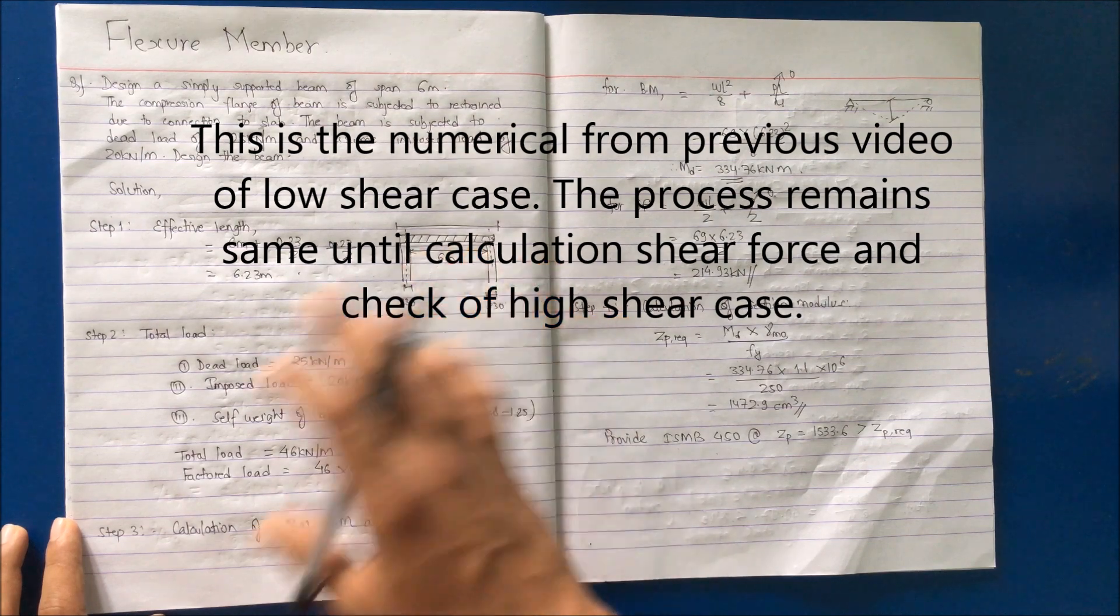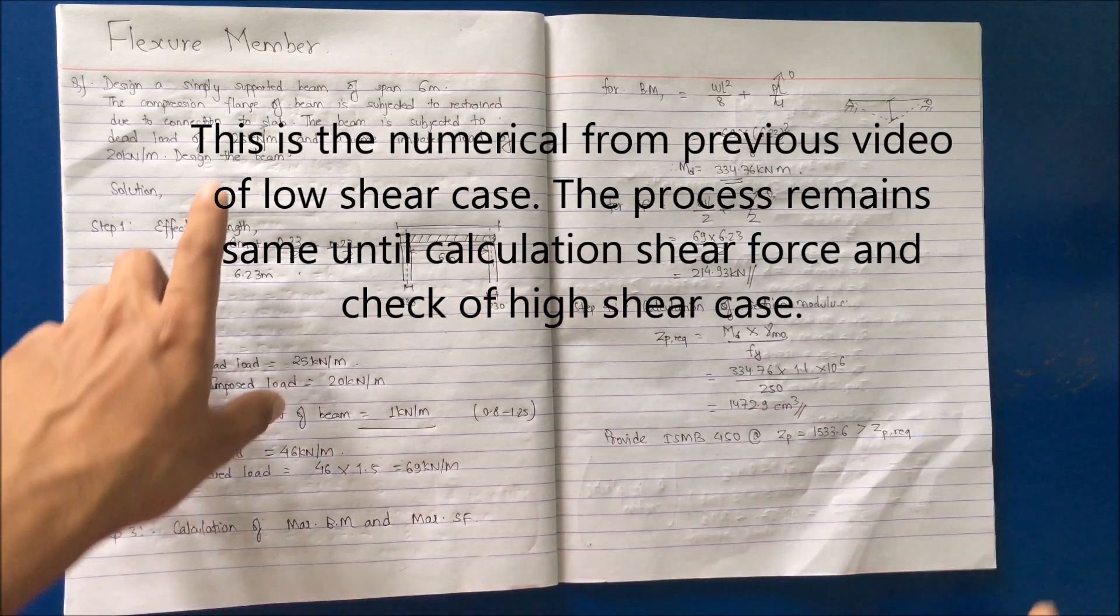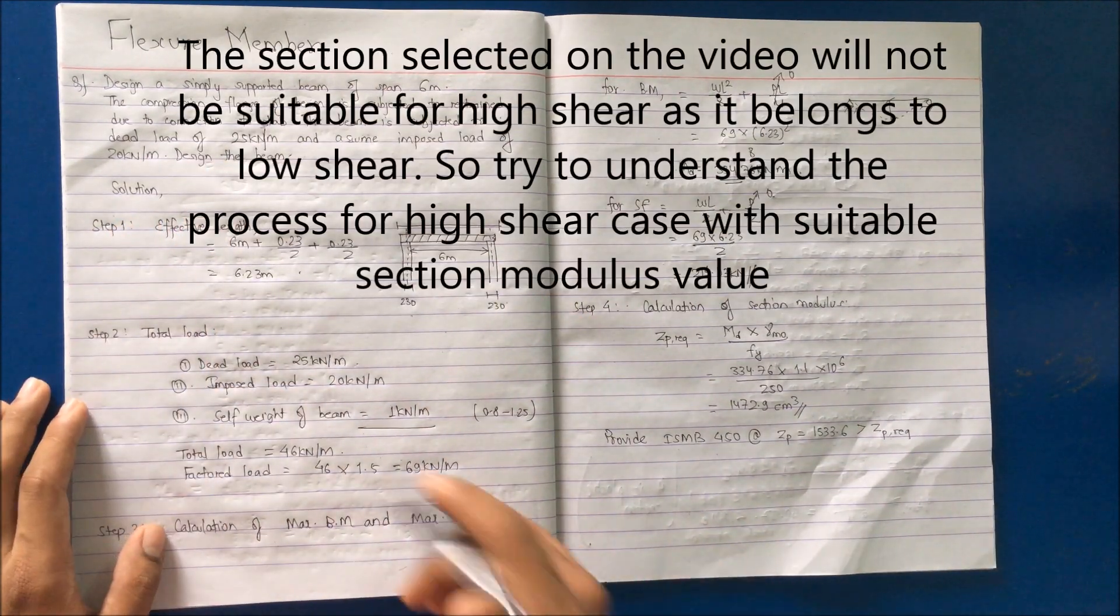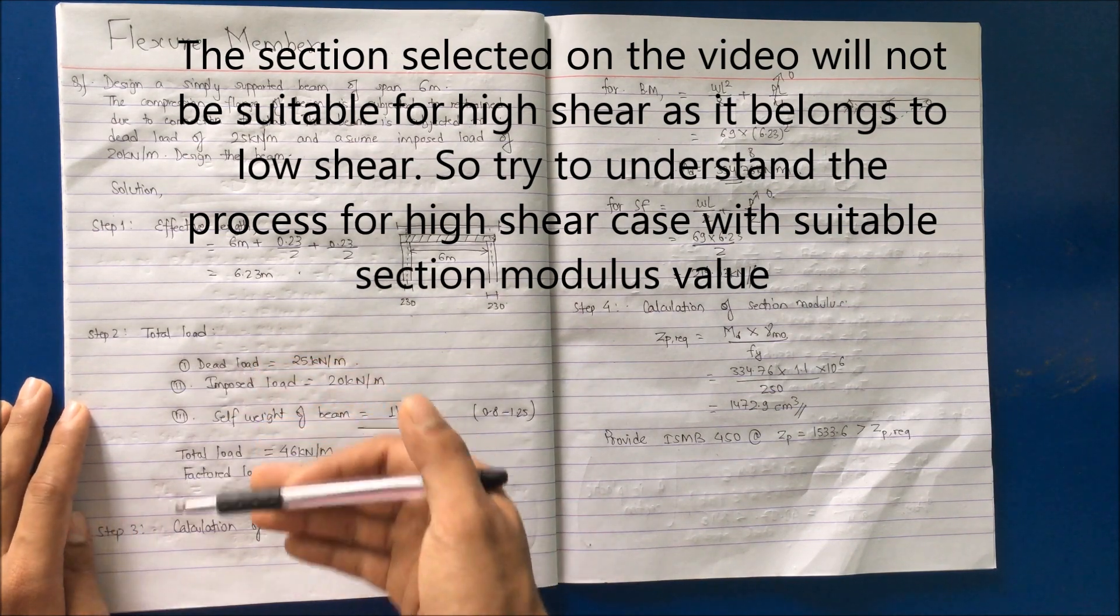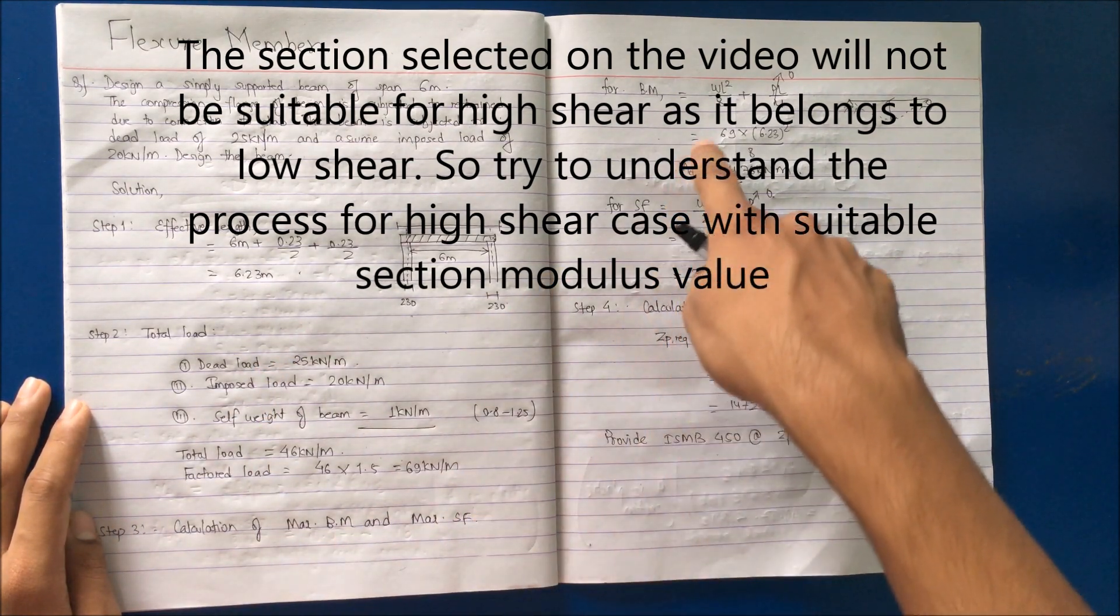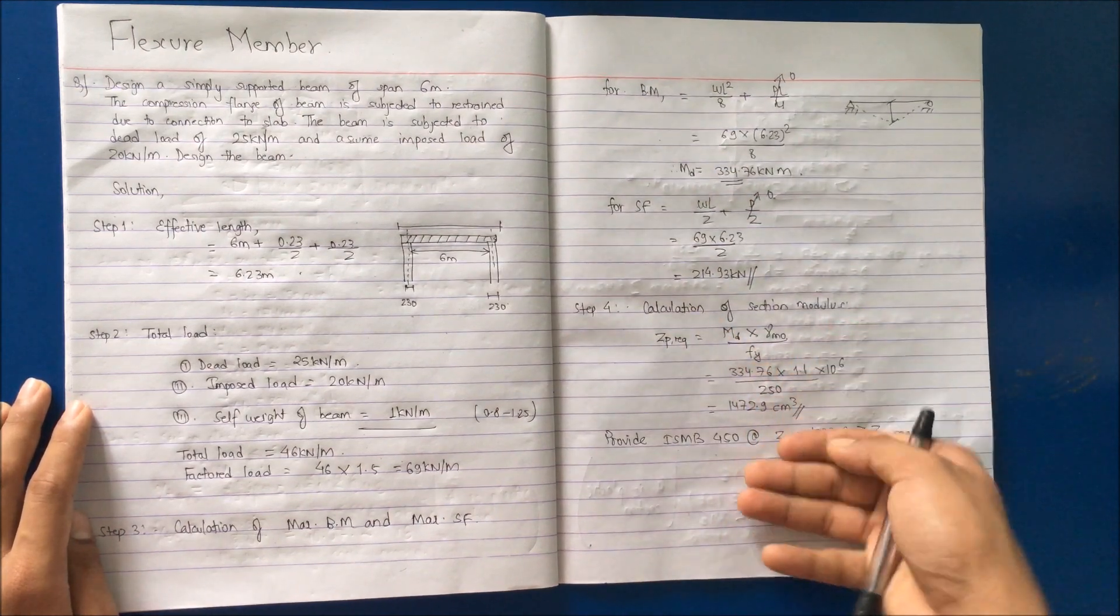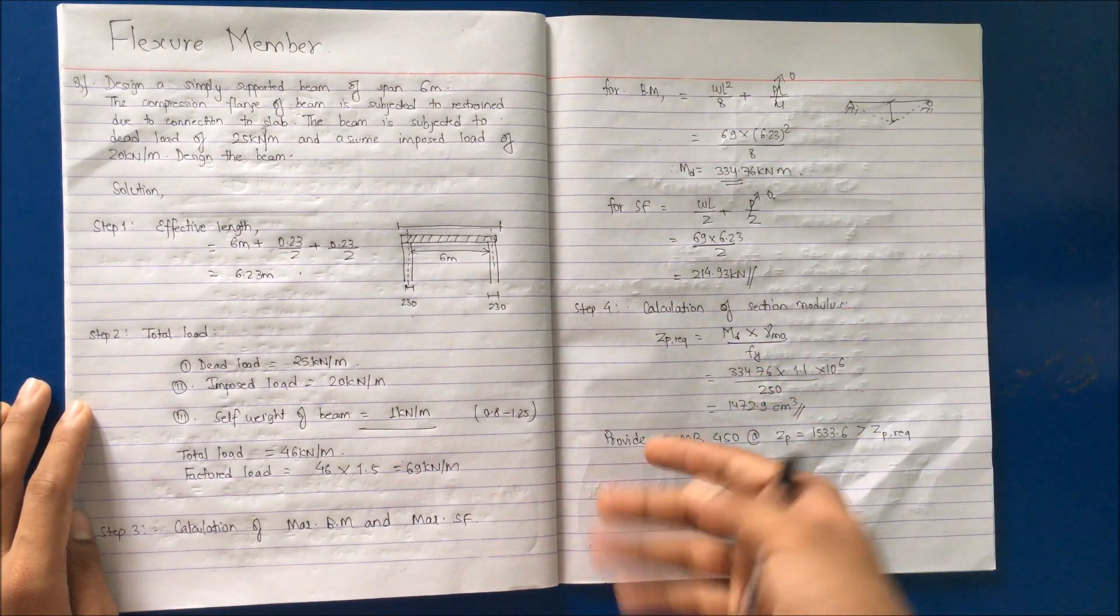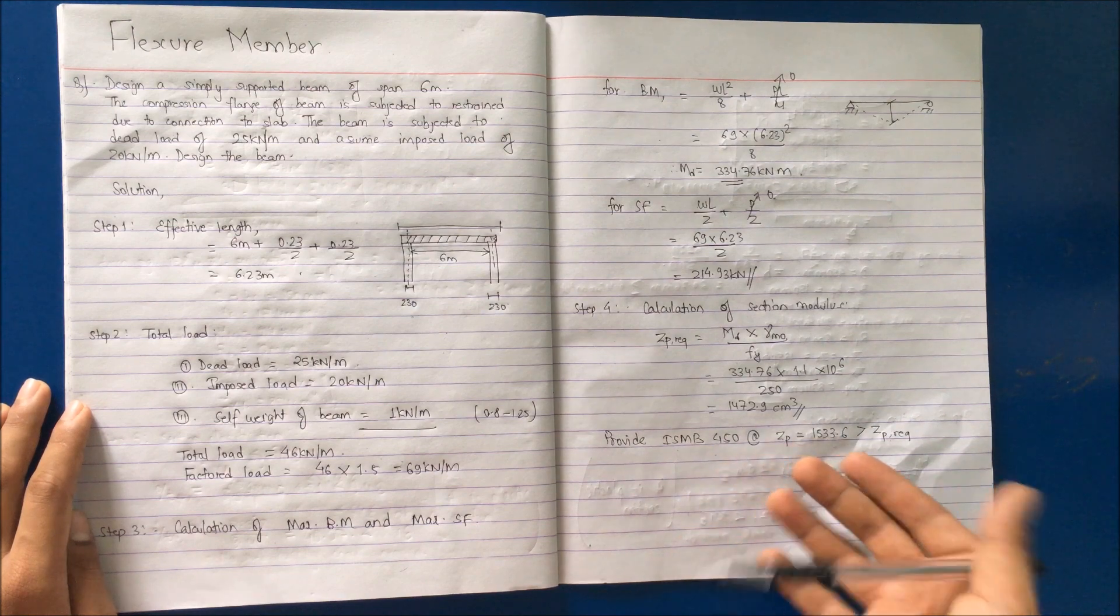I am taking the same example from the previous video on the low shear case. You will find the effective length, total load imposed, calculation of maximum bending moment and maximum shear force, calculation of section modulus, and selection of the section will be done in the same manner.